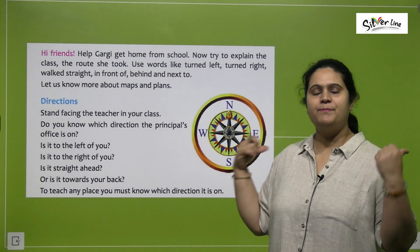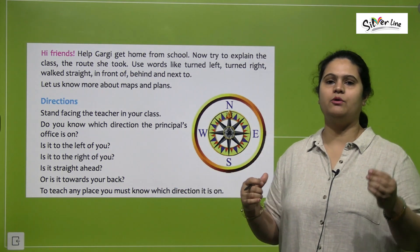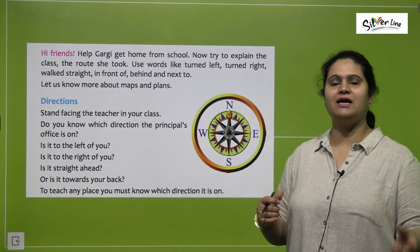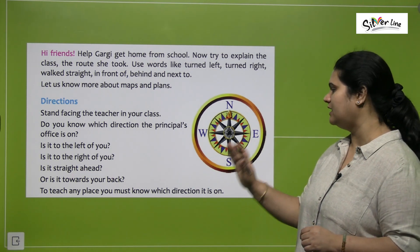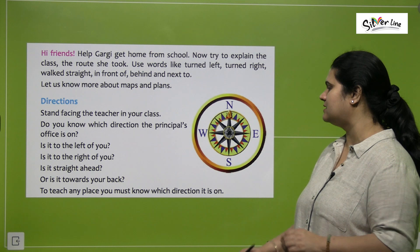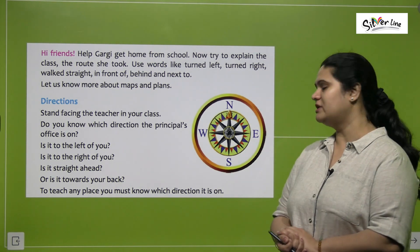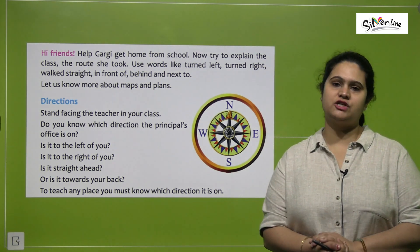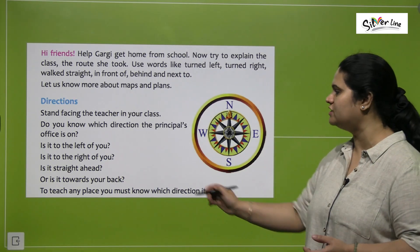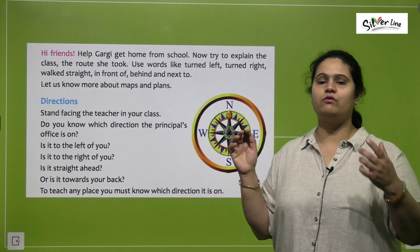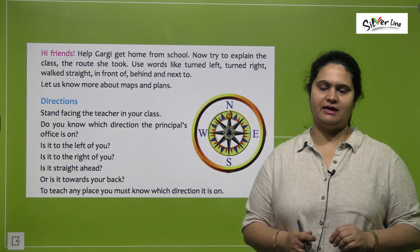Or is it towards your back? Kya aap ek jaga par khadhi hoke is cheez ko pata kar sakte hai? This is called direction sense. To reach any place, you must know which direction it is in — kisi bhi jagah par paunchne ke liye, you must know ki woh konsi direction mein hai.